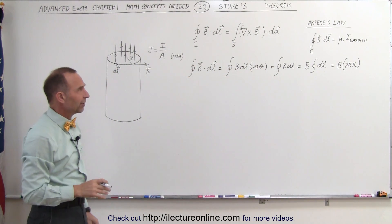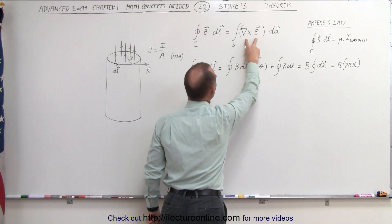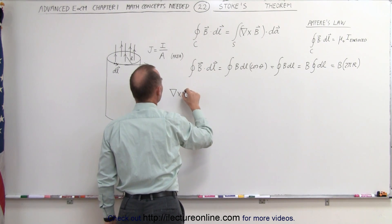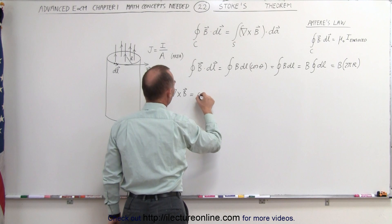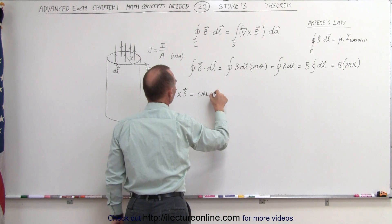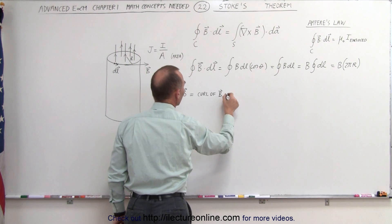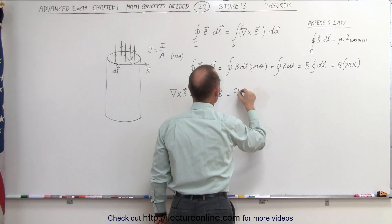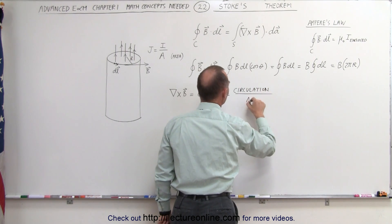Now let's take a look at the right side. What's inside here is the curl of B. Let's get a better feel for what that is — what do we mean by the curl of B? The definition of a curl of B, the magnetic field, is equal by definition to the circulation divided by the area.